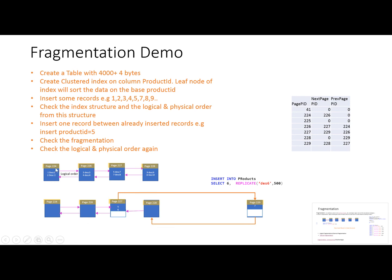In this demo, records 1 and 2 are on one page, 3 and 4 on another, and 5 and 7 on another — logical and physical order are almost the same. When I insert record number 6, it will cause a page split: record 7 will move to a new page, leaving empty space so record 6 can be placed with record 5. A new page will be created, and there will be internal fragmentation. After this insertion, the page split will occur and a new page will be created.